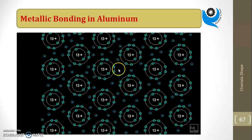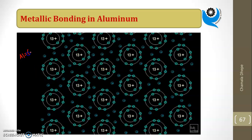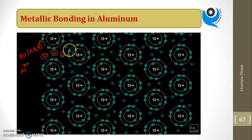Electrostatic force of attraction between the delocalized electrons and the positively charged metal ions forms the metallic bond. For the example of metallic bonding in aluminium: aluminium has atomic number 13, so it has 3 positive charges on its core after the 3 valence electrons are removed. These three valence electrons revolve everywhere — they are not fixed — they can move anywhere in the sheet. There is a continuous bond formed between the positively charged core and the negatively charged valence electrons.